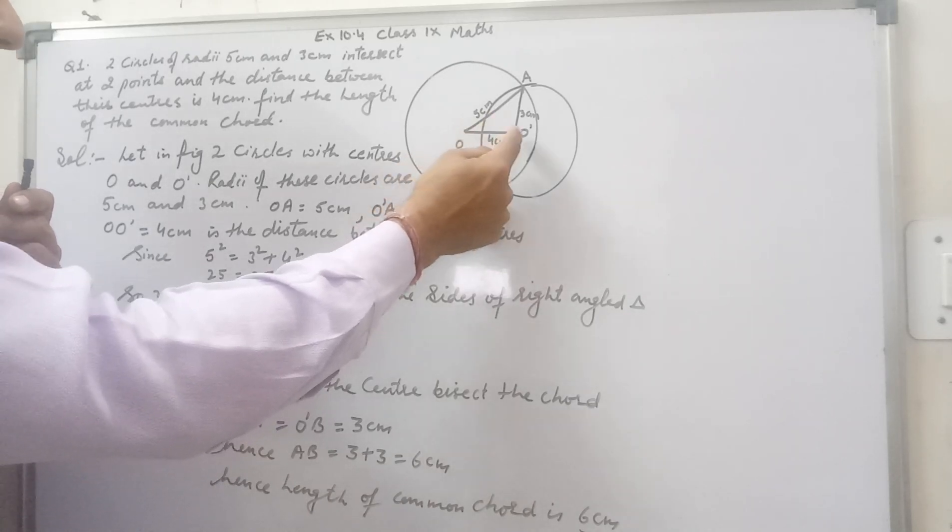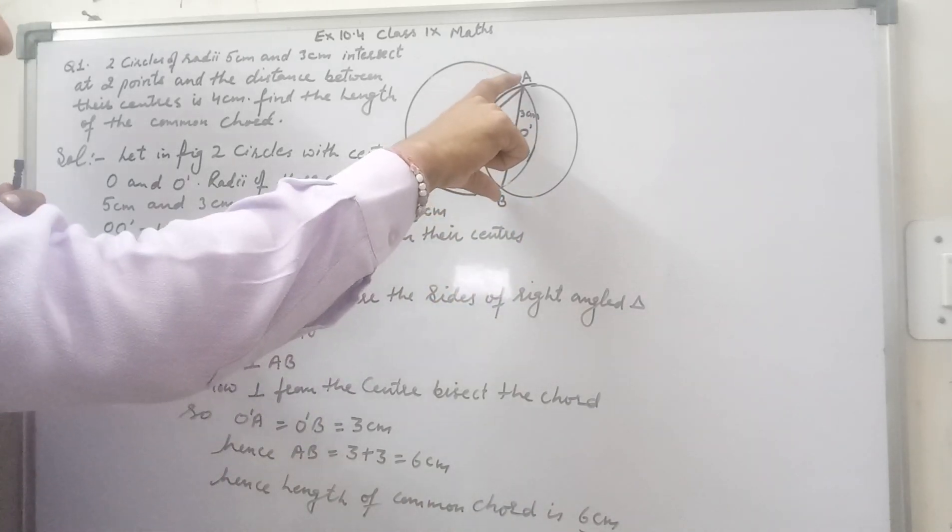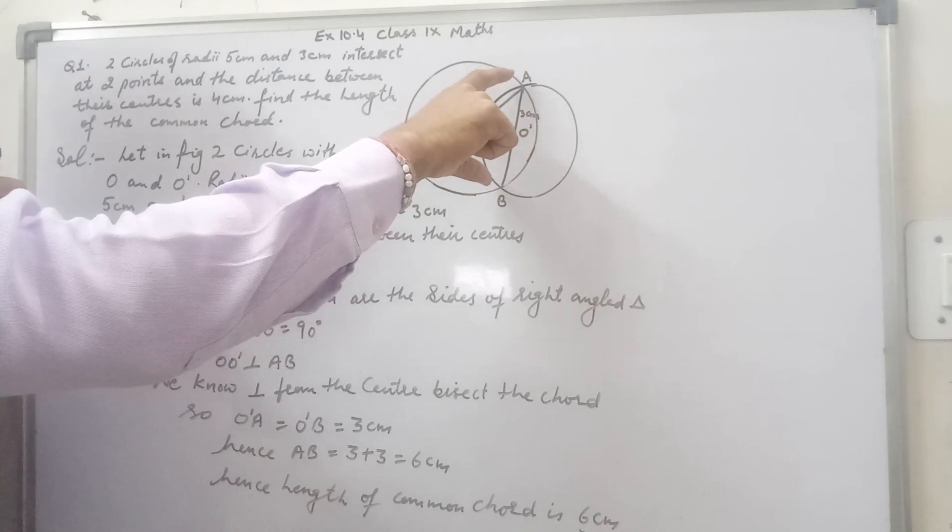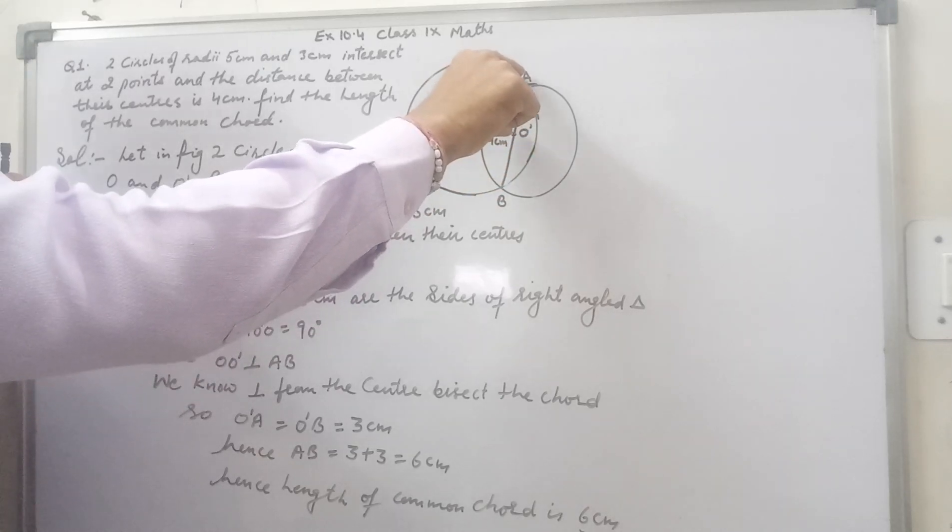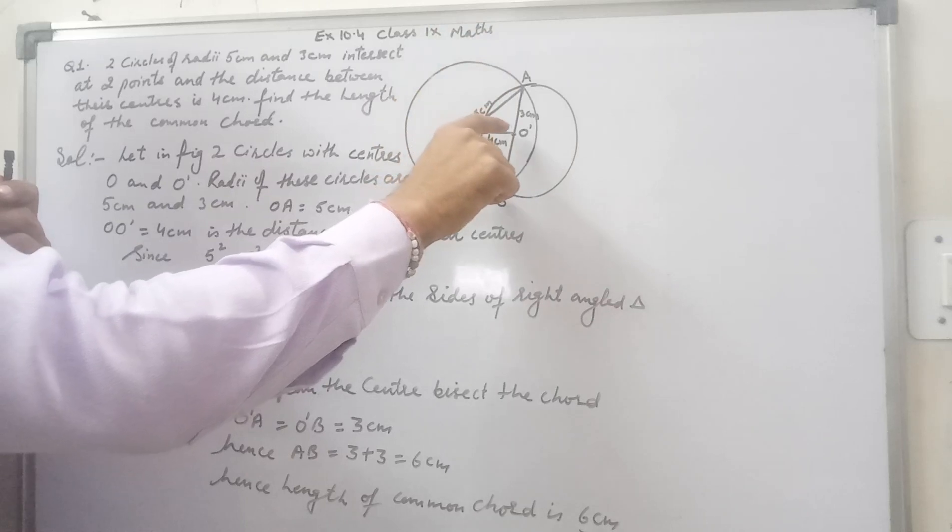We know also that perpendicular from the center bisects the chord. It means O O dash is bisecting chord AB.